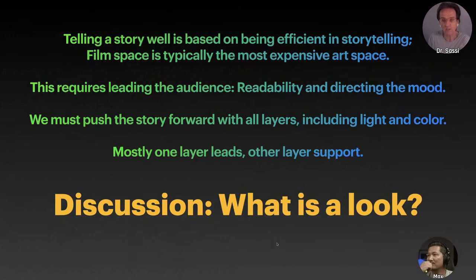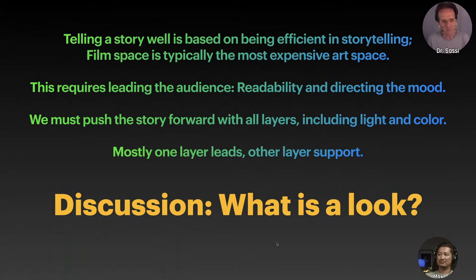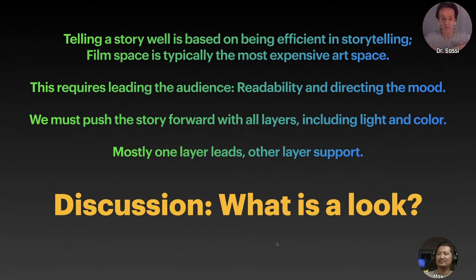Telling a story well is based on being efficient in storytelling. Film space is typically the most expensive art space. This requires leading the audience, readability, and directing the mood. We must push the story forward with all layers, including light and color — mostly one layer leads, other layers support. What are the layers? Layers are, for example, set design, costumes, light, the camera setup, perspective, sound, music, the score, and so on. So — discussion: what is the look?